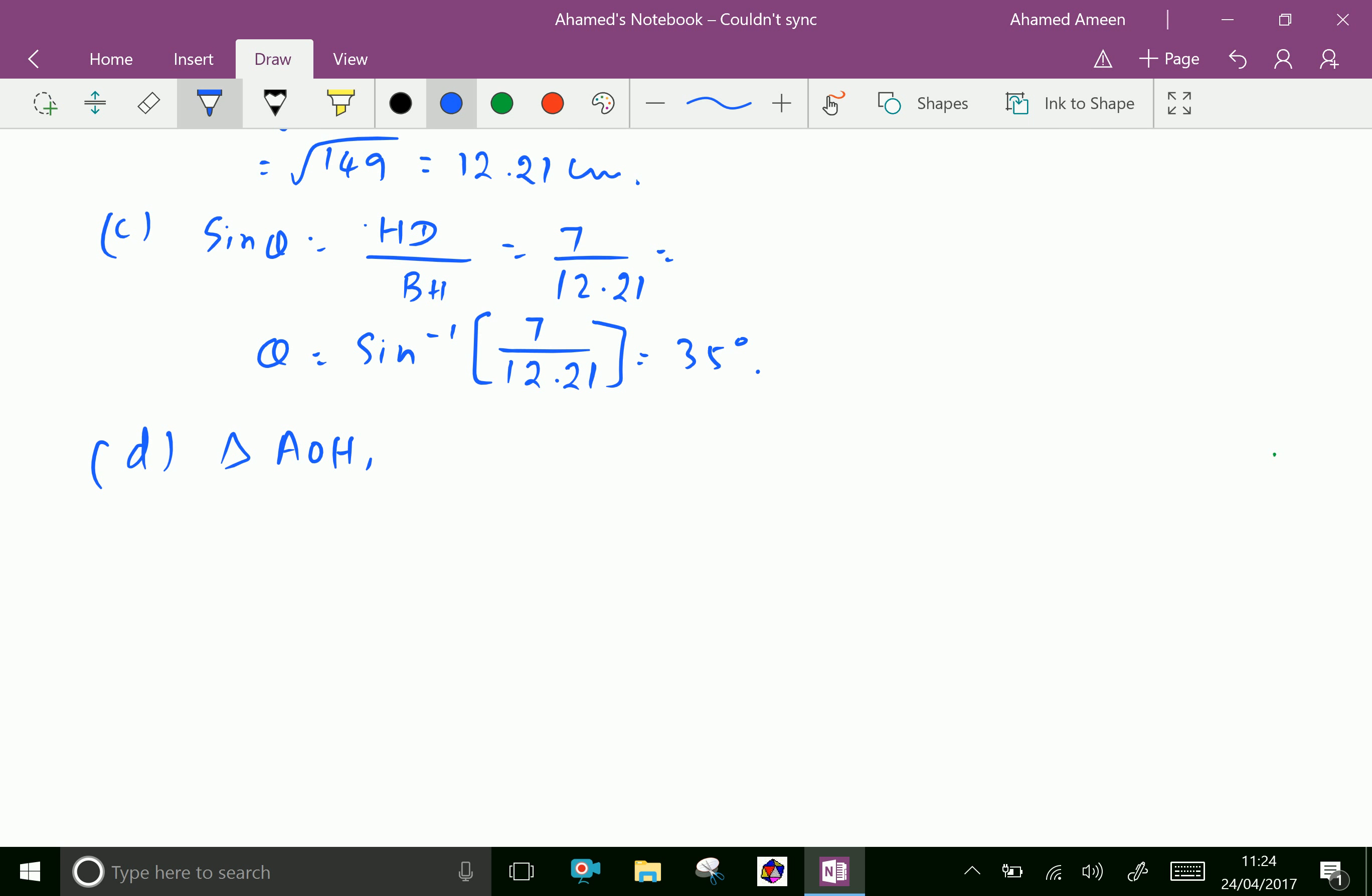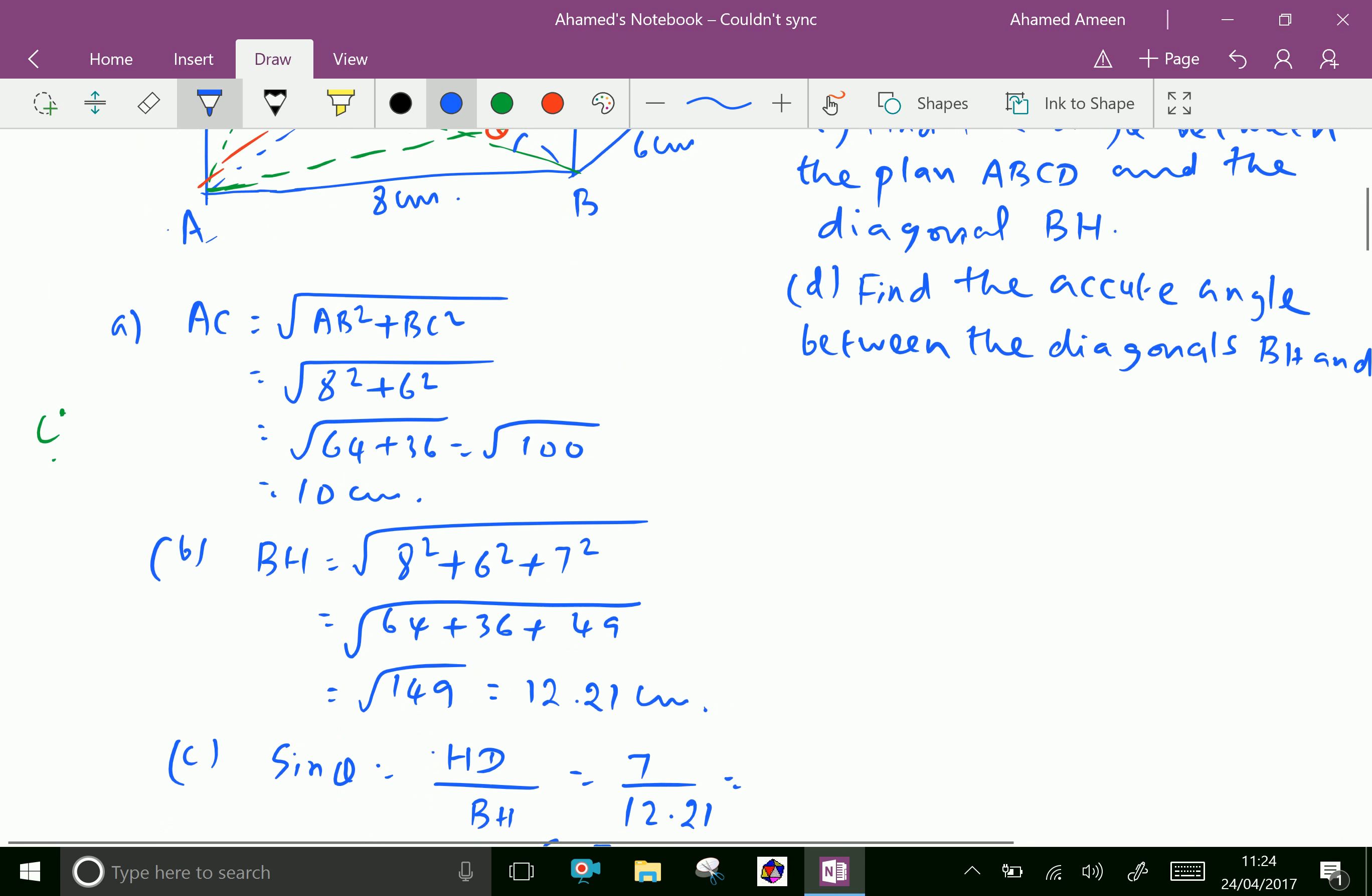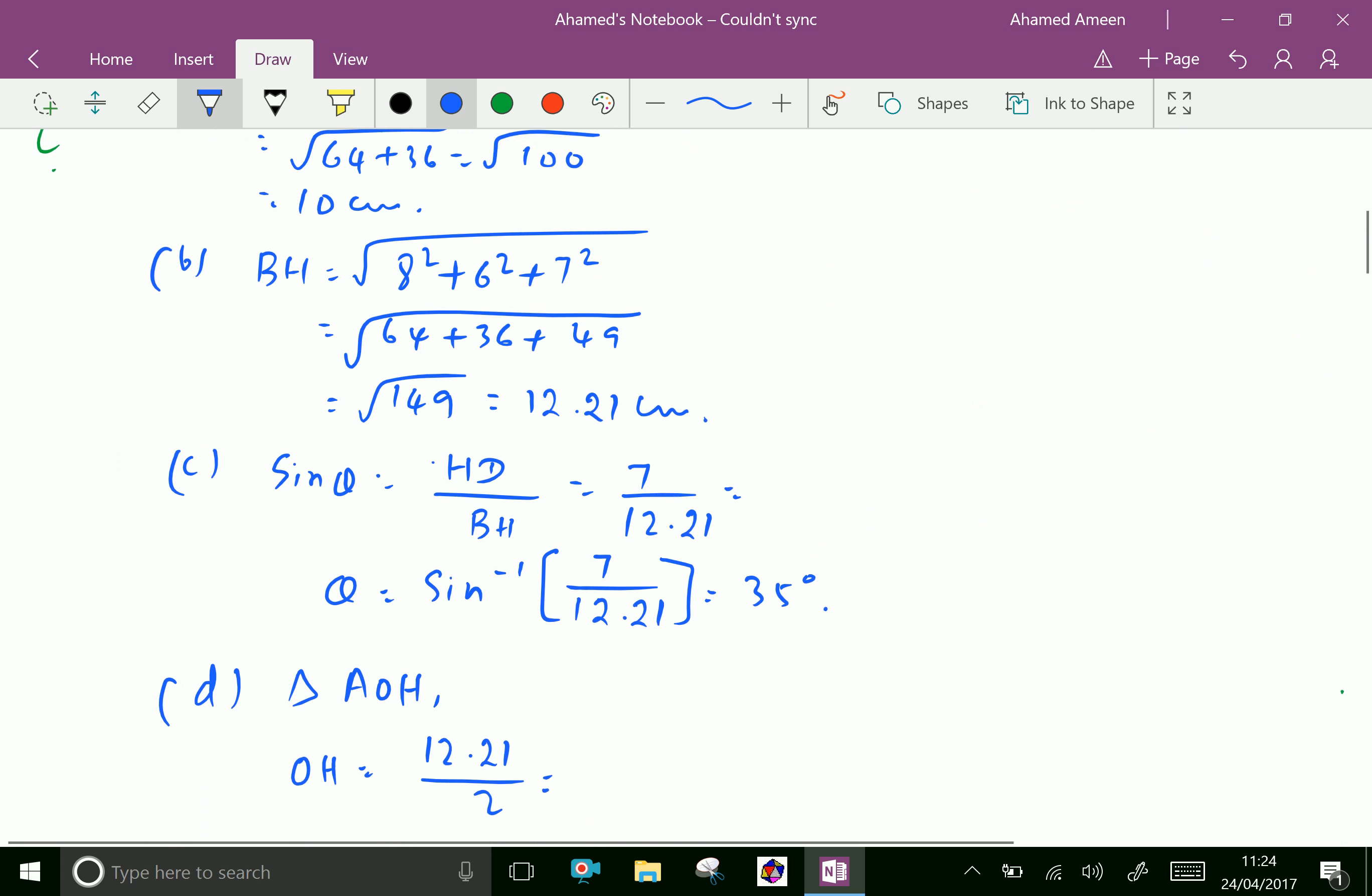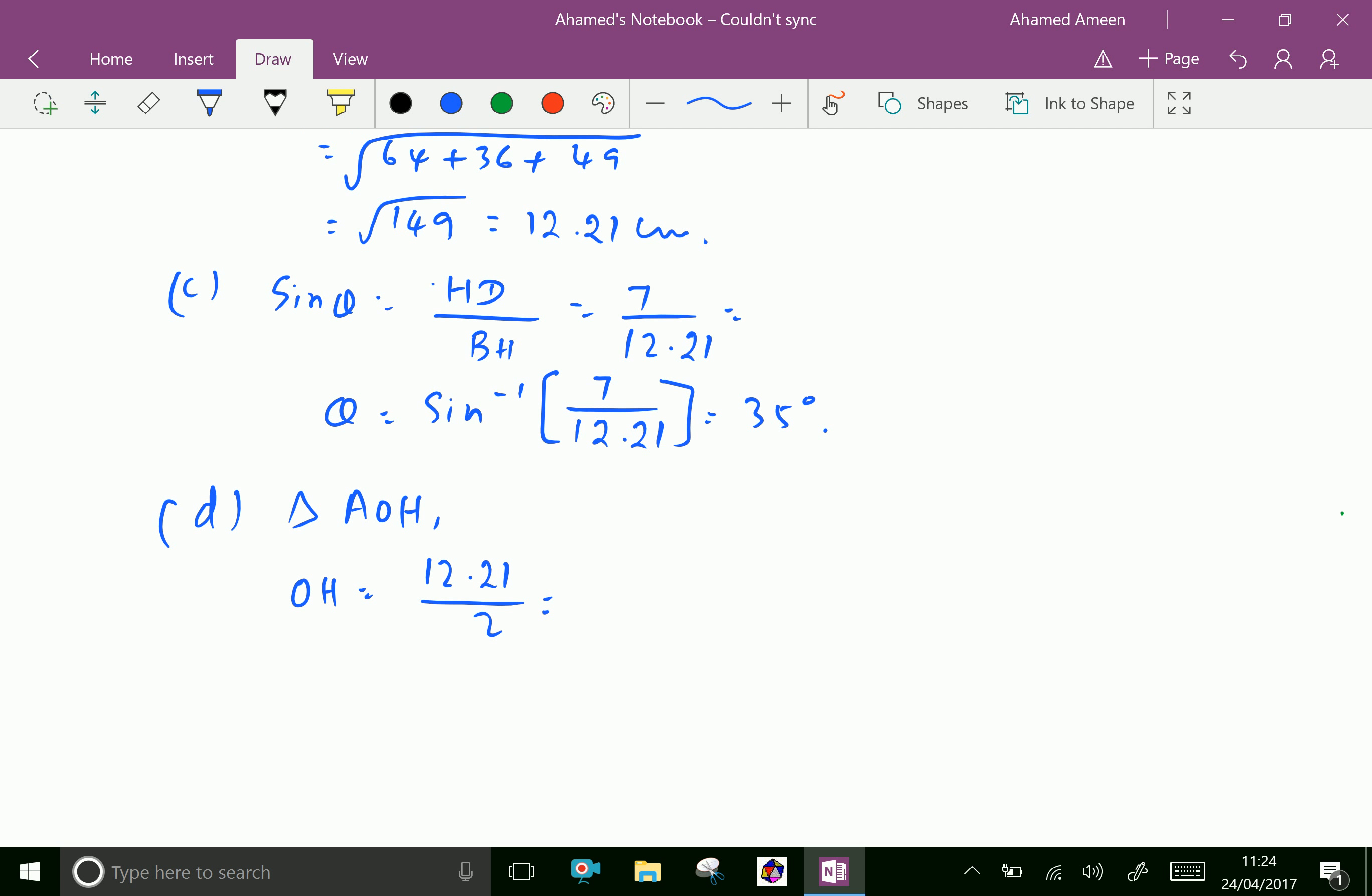OH equals 12.21 over 2, because this intersects at O, which is at the center point. The midpoint of BH and AG is at O. Here, 12.21 over 2 gives 6.105 centimeters.